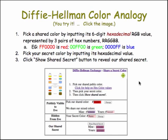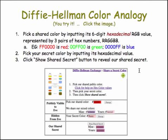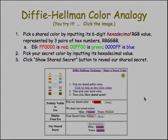Here's an app that you can try to play with the color mixing analogy. In this case, however, the colors are represented by a six-digit hexadecimal value — an RGB value — which is the standard way colors are represented in browser languages such as HTML. The first two digits represent the amount of red, the second two digits the amount of green, and the third two digits the amount of blue. You pick a secret color by inputting its hexadecimal value and a shared color, then click on 'show shared secret' to observe the secret that would be exchanged.